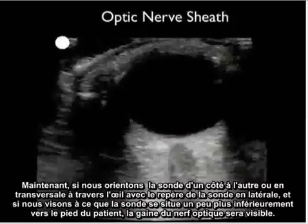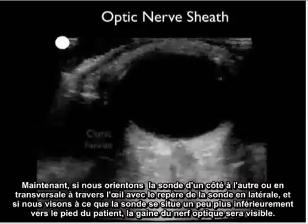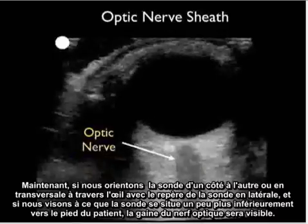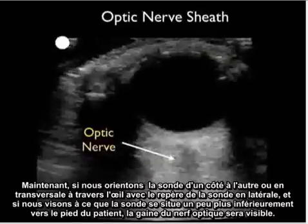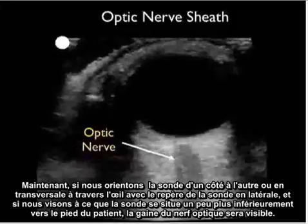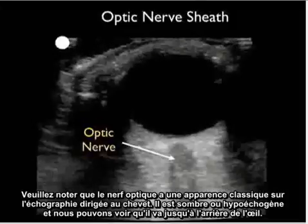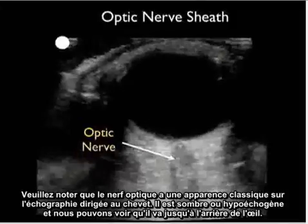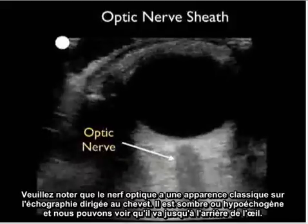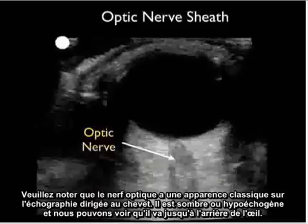If we aim the probe slightly more inferiorly toward the patient's foot with the transverse side-to-side orientation and probe marker lateral, the optic nerve sheath comes into view. The optic nerve has a classic appearance on bedside ultrasound: it is dark or hypoechoic, and can be seen leading right up to the back of the eye.